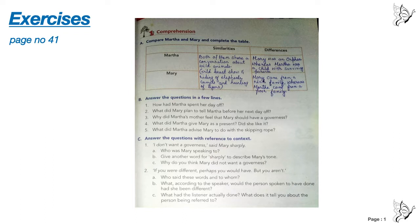You see, here it is given Martha and Mary, similarities we have to write only one and differences we have to write two. Okay, because in the story itself only one similarity is given between them and differences are many. So, we will write only two differences because two boxes are given.